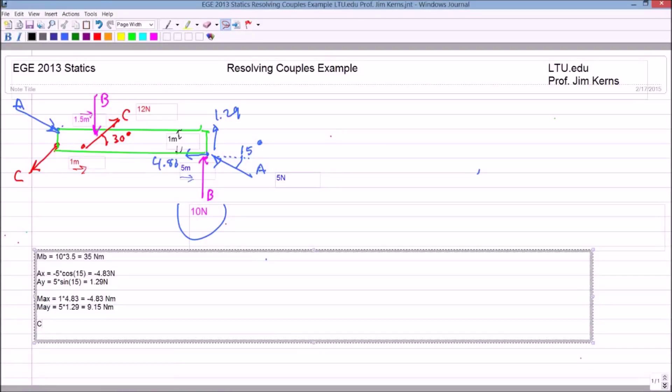So my C vector, I'll put the vector signs on afterwards, equals 12 times a cosine of 30 times i, plus 12 times the sine of 30 times j, plus it's two-dimensional, so zero times k, and that's our vector C there.